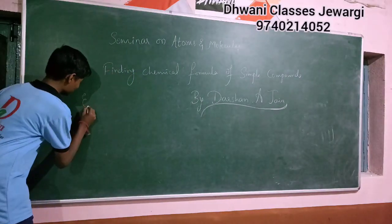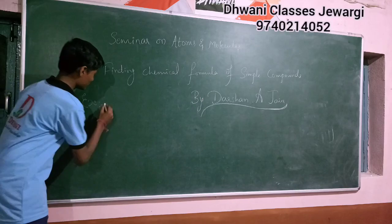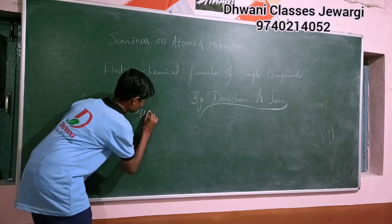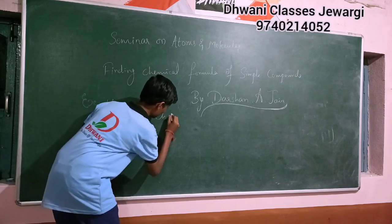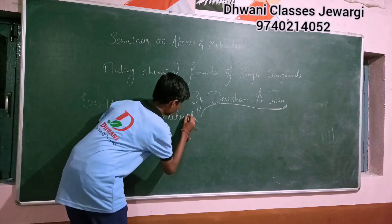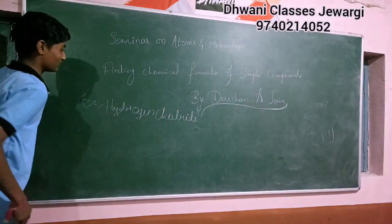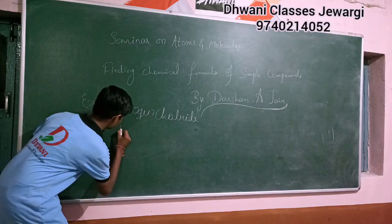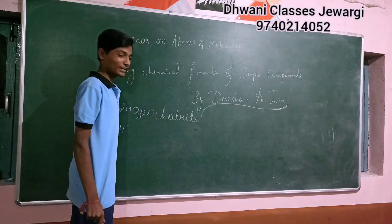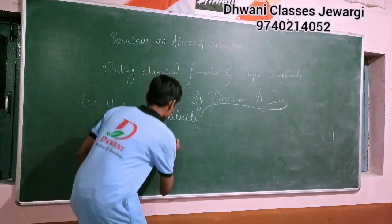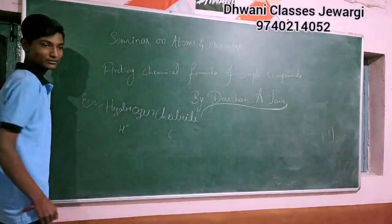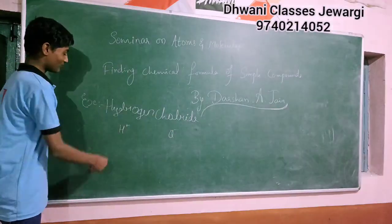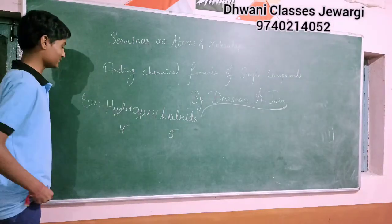Example: hydrogen chloride. This is the chemical simple compound — we have to find out a chemical formula. What is the ion of hydrogen? H plus. Valency of hydrogen: one.